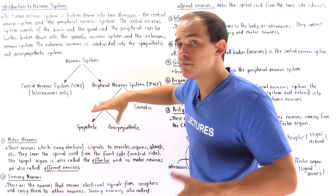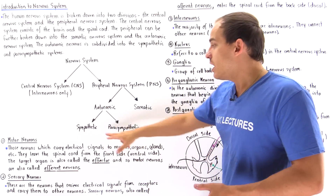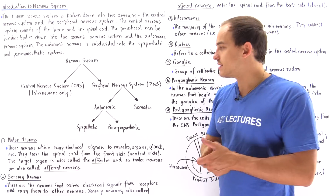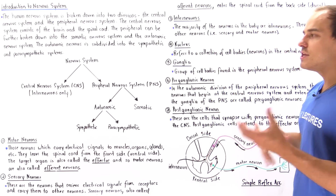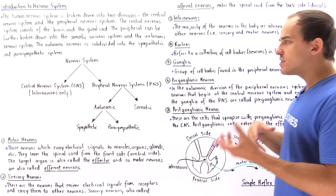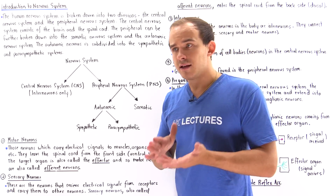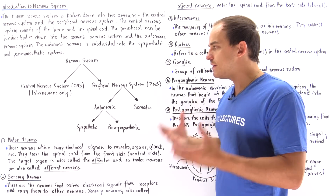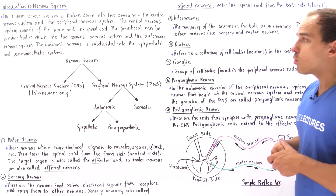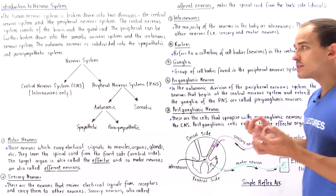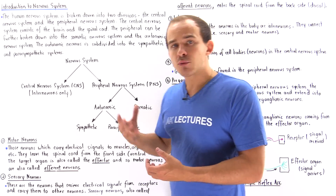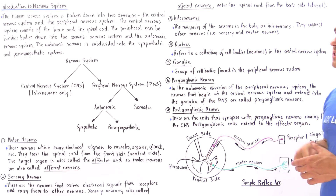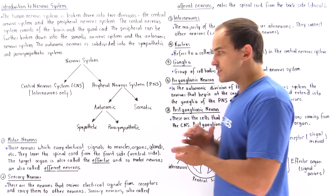The autonomic system can be divided into the sympathetic and the parasympathetic system. In the next several lectures, we're going to discuss the details and functionality of each one of these systems individually. In this lecture, we're going to focus on terminology that we're going to need to know in our discussion on the human nervous system.